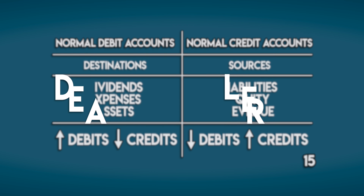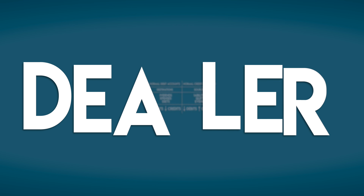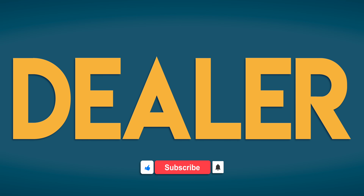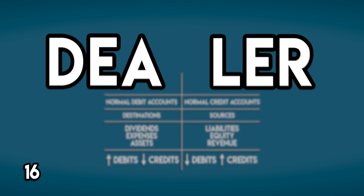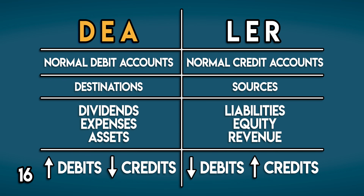There's a simple acronym to help you remember all of this: DEALER. On the left we have DEA — Dividends, Expenses, and Assets — these are normal debit accounts. On the right we have LER — Liabilities, Equity, and Revenue — these are normal credit accounts.